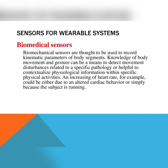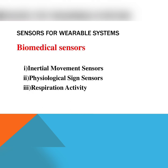Next topic: Biomedical Sensors. Biomedical sensors are designed to record kinematic parameters of body signals. Kinematic means it is a moving parameter. Knowledge of body movement and gestures can be a means to detect movement disturbances related to a specific pathology, or helpful to contextualize physiological information within specific physical activities. An increase in heart rate, for example, could be either due to altered cardiac behavior or simply because the person is running. Biomedical sensors are classified as three types: inertial movement sensors, physiological sign sensors, and respiration activity sensors.